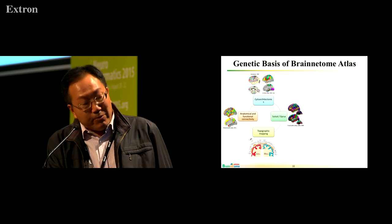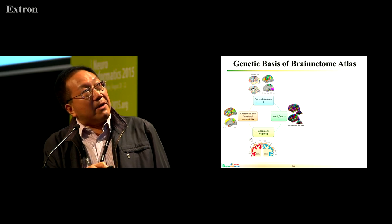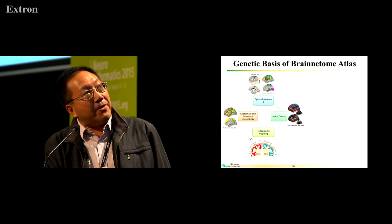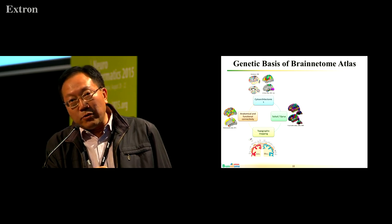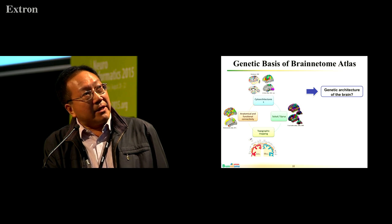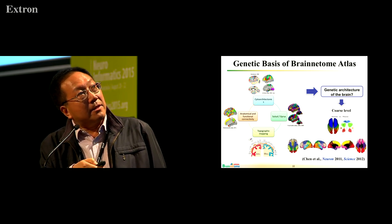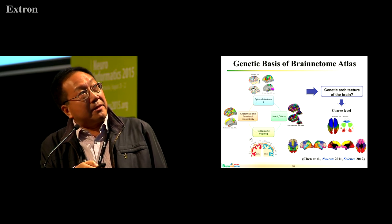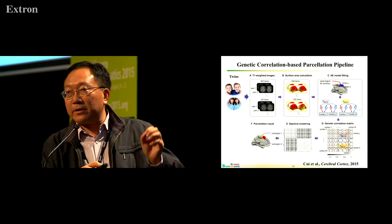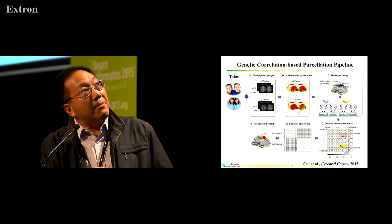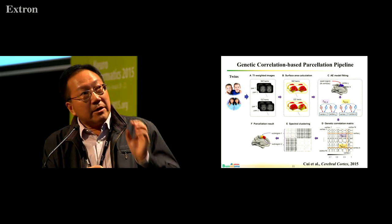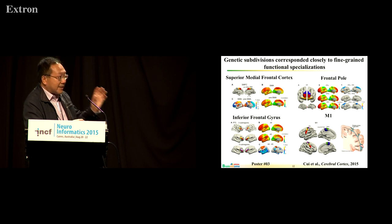Now we move to the core question in this lecture. We can parcellate with different information — for example, cytoarchitecture, anatomical connectivity profile, and other information. We think this is an interesting thing for the cortical pattern. With very different technologies, including trace studies where we cannot use connectivity profile or cytoarchitecture, but only genetic correlation, we try to parcellate into the same regions. We find using this kind of technology, we can also get the same result — very similar.